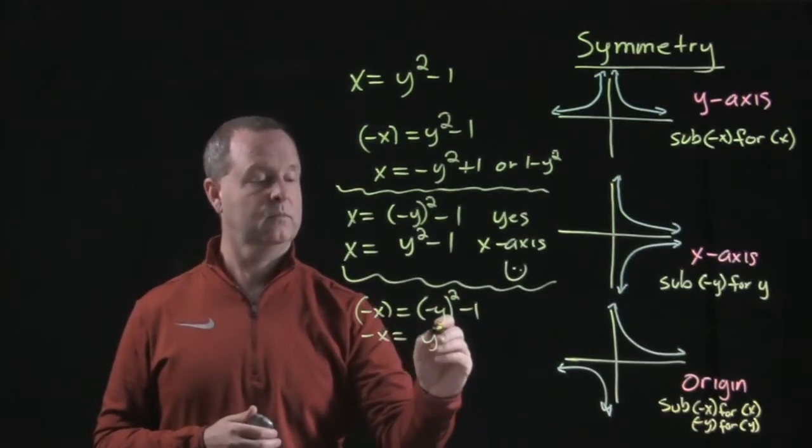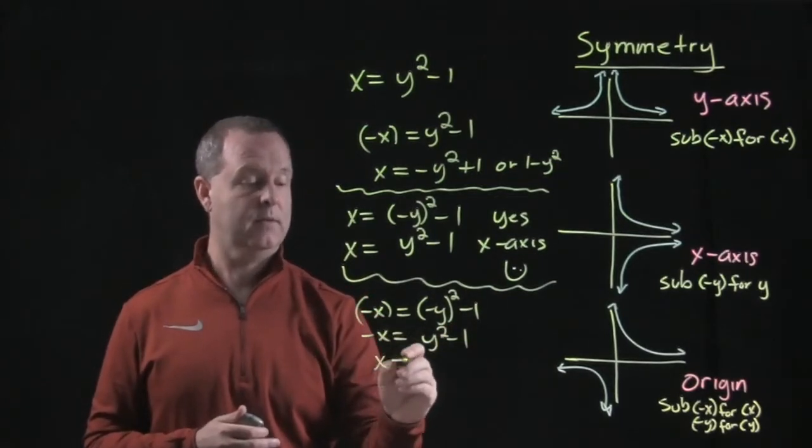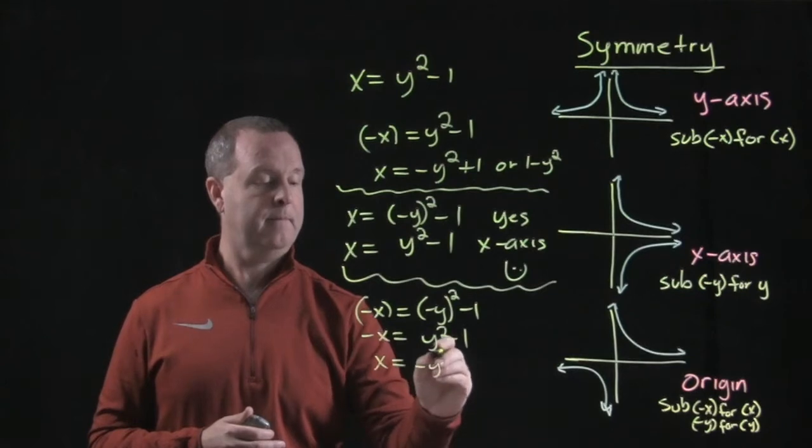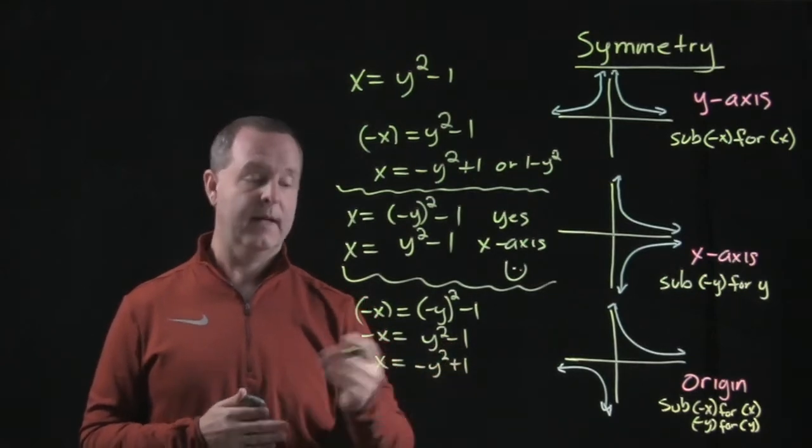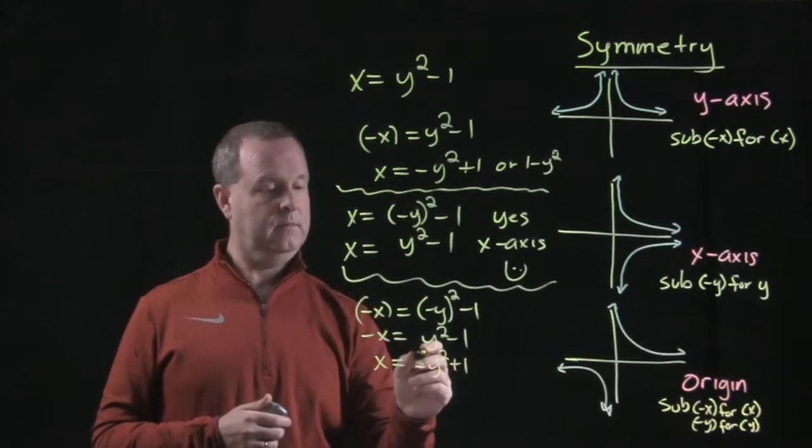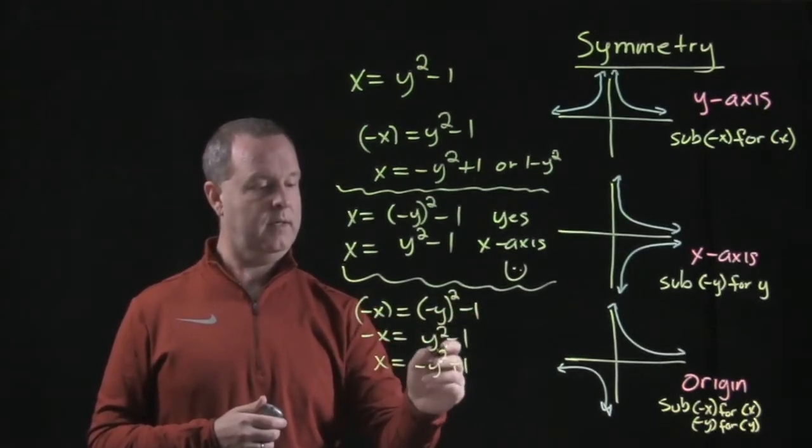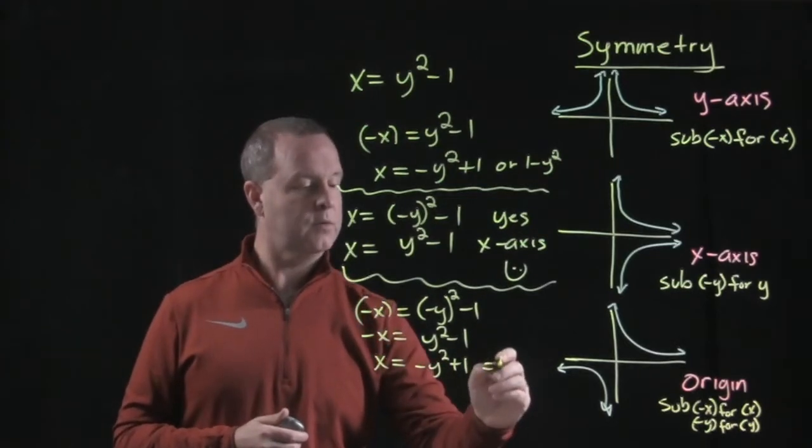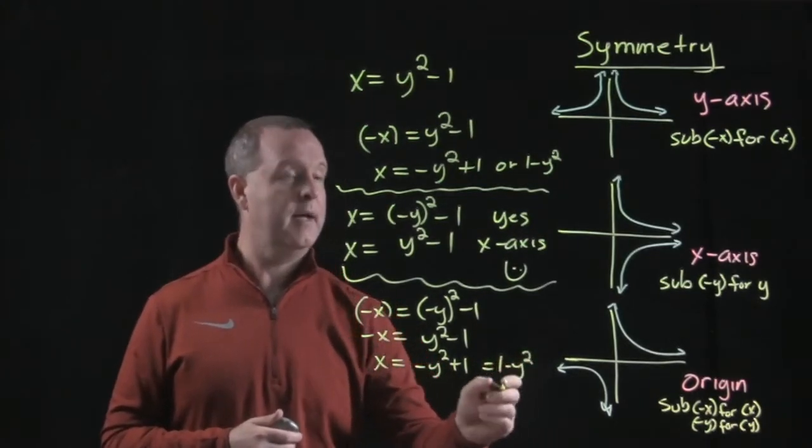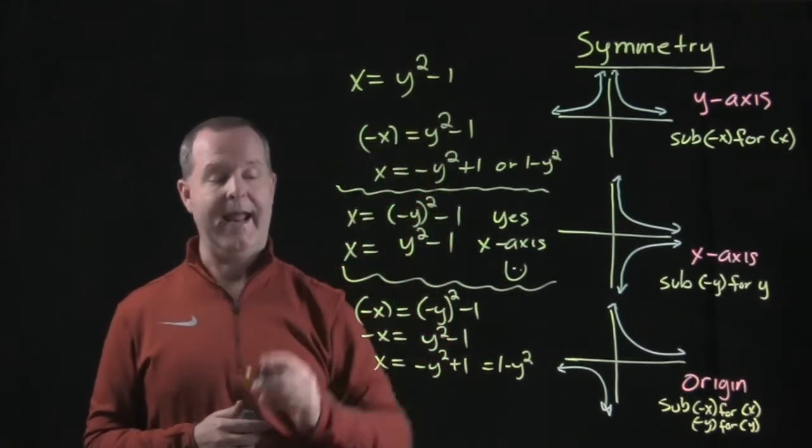Distribute the negative through, so I just have x equals, and I can reverse those around. So y squared minus 1, y squared equals 1 minus y squared. And you can see that that is not the same with what I had. So it's neither on that one, that is not symmetrical about the origin.